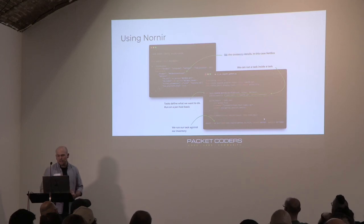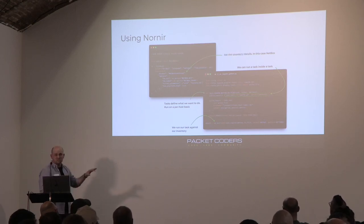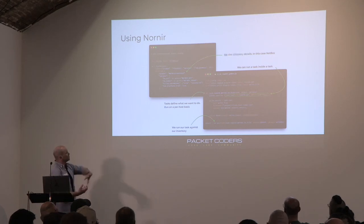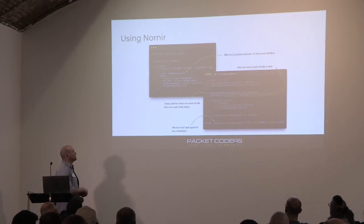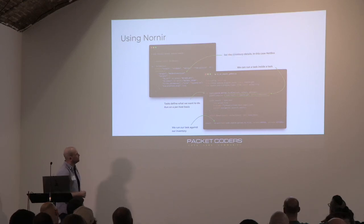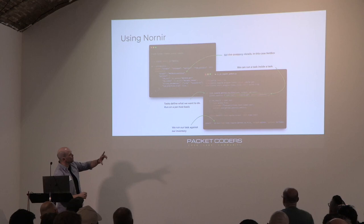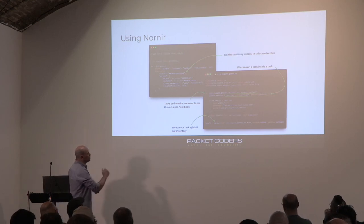To run Nornir, you create a Nornir script and give it a config file where you specify how to use your inventory. We're using the Netbox inventory plugin, giving it parameters to reach the Netbox API. In our script, we've installed the NAPALM plugin and we're going to run the NAPALM task plugin to execute our getters — going out to the network, getting the data back, and writing it to some files.